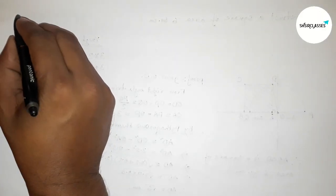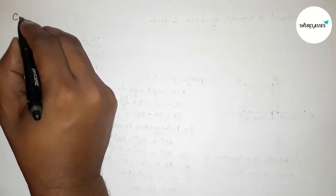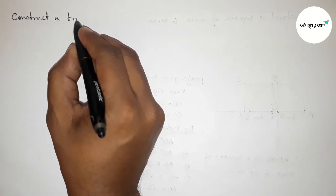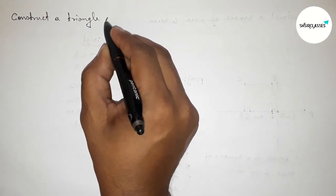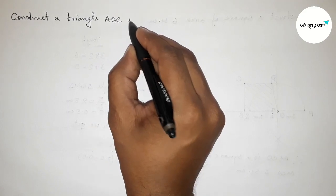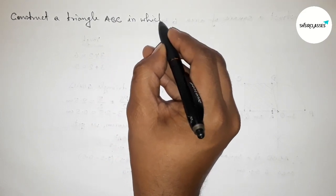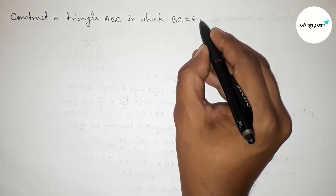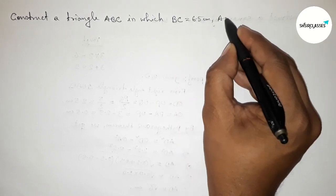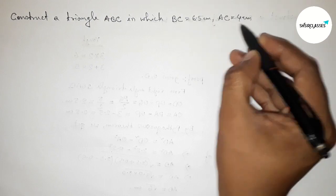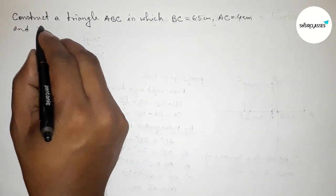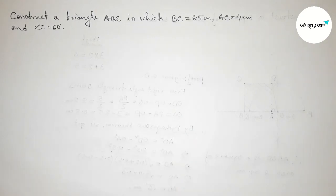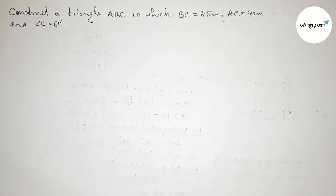Hi everyone, welcome to SI Share Classes. Today in this video we have to construct a triangle ABC in which BC equals 6.5 centimeter, AC equals 4 centimeter, and angle C equals 60 degrees. Please watch the video till the end. Let's start.